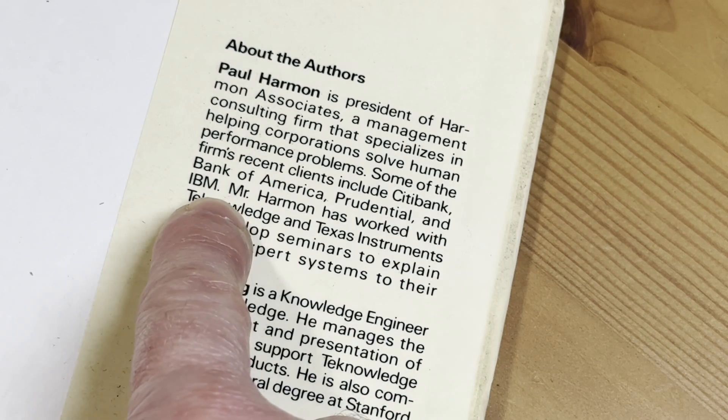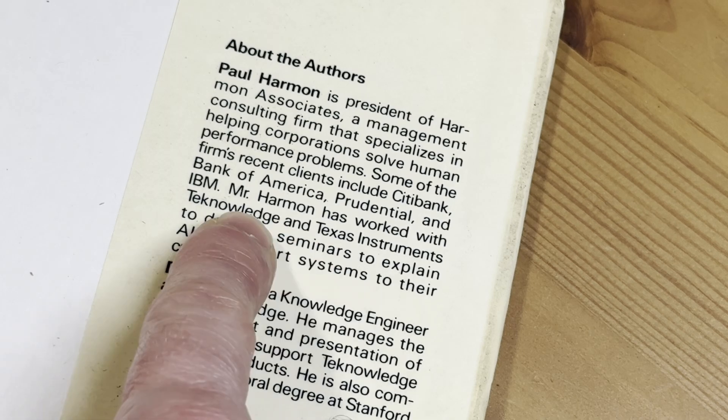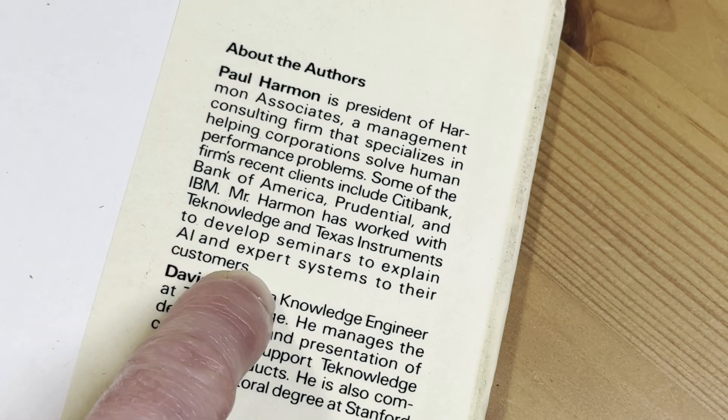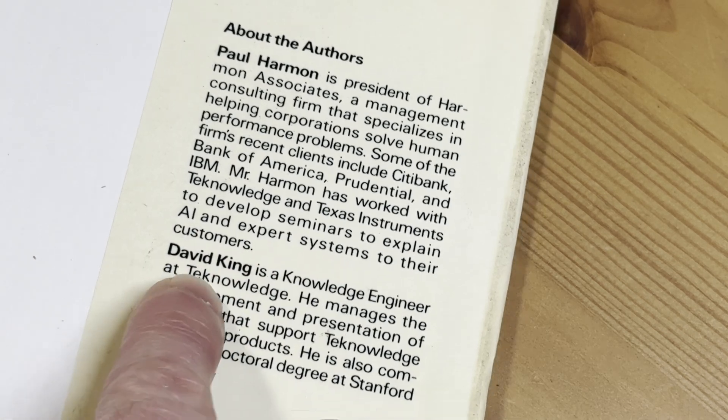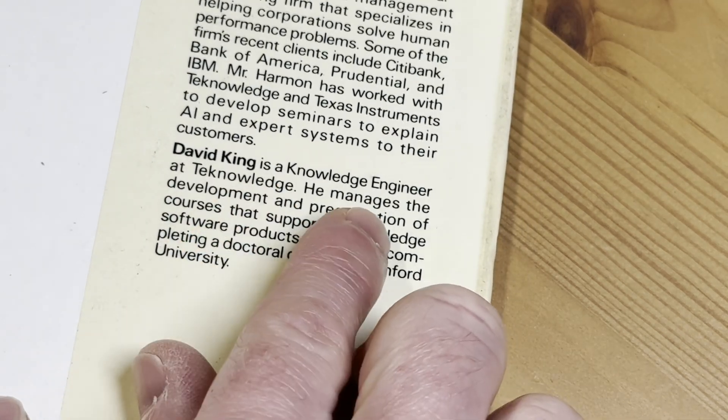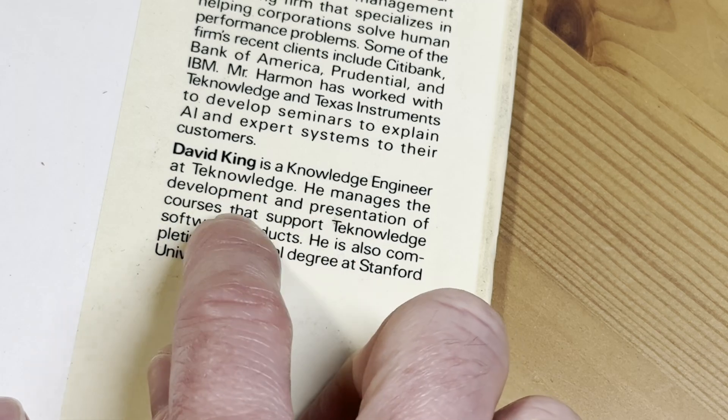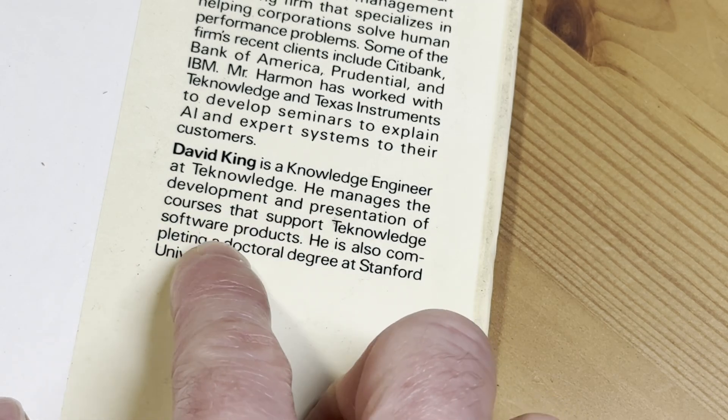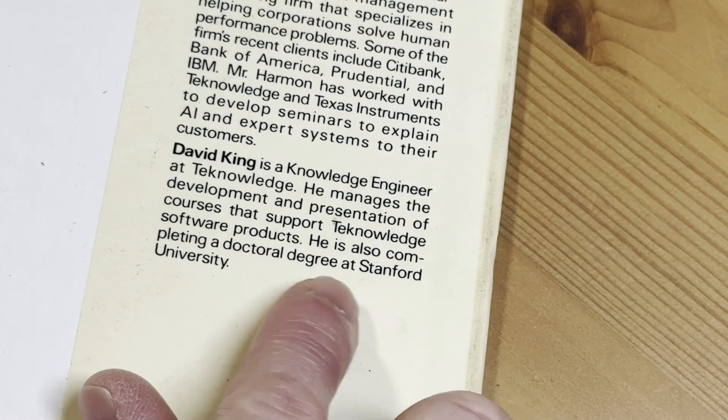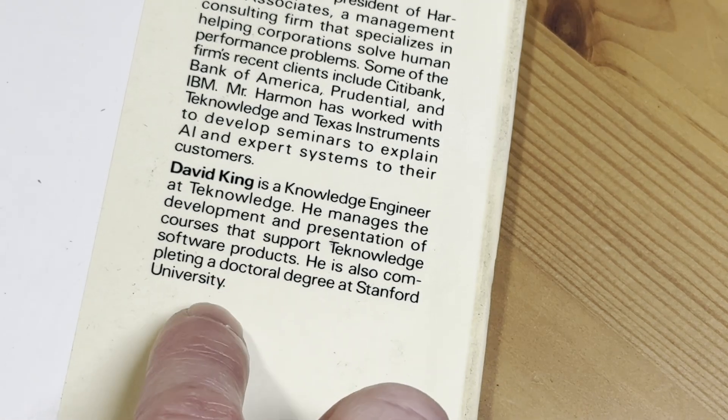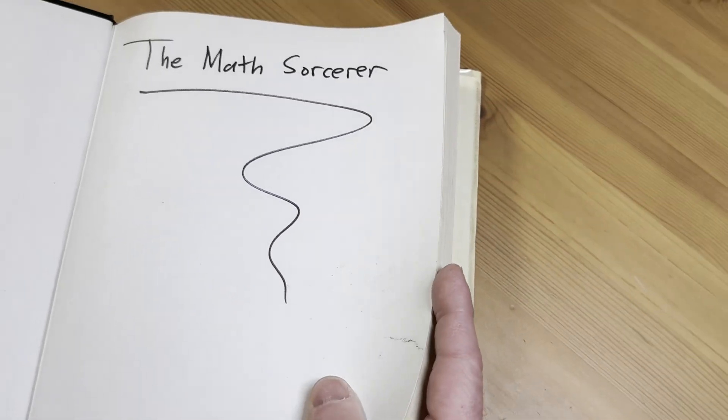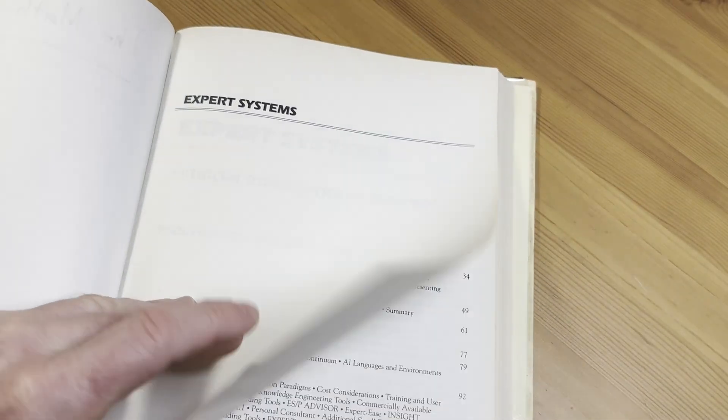Mr. Harmon has worked with Tech Knowledge and Texas Instruments to develop seminars to explain AI and expert systems to their customers. And then David King is a knowledge engineer at Tech Knowledge. He manages the development and presentation of the courses that support Tech Knowledge software products. He's also completing a doctoral degree at Stanford University. I just wanted to show you that so you know who the authors are of this book.